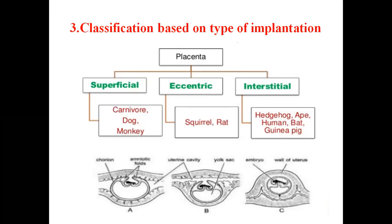The third classification is based on the type of implantation. Placenta is of three types: superficial, eccentric, and interstitial. Superficial implantation is seen in carnivores, dogs, and monkeys. Eccentric implantation is seen in squirrel and rat. Interstitial implantation is seen in hedgehog, ape, human, bat, and guinea pig.